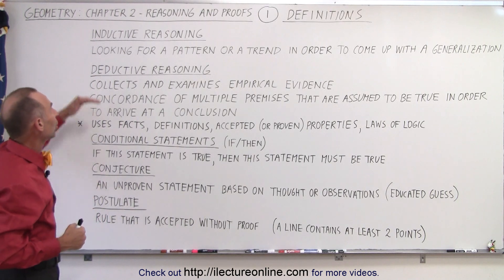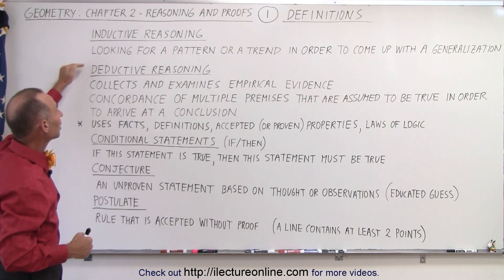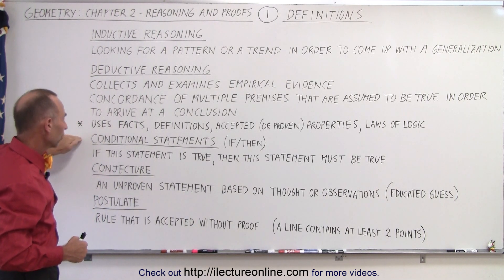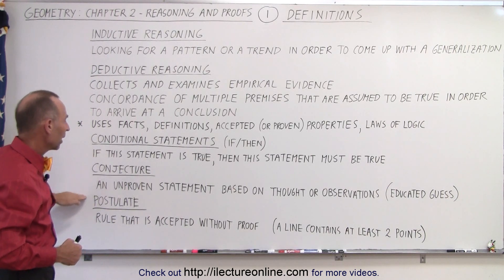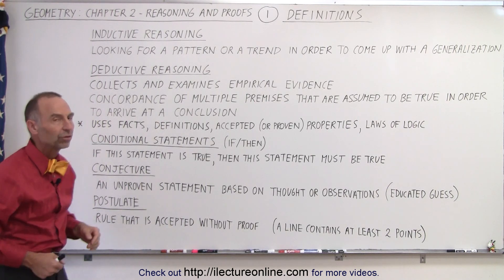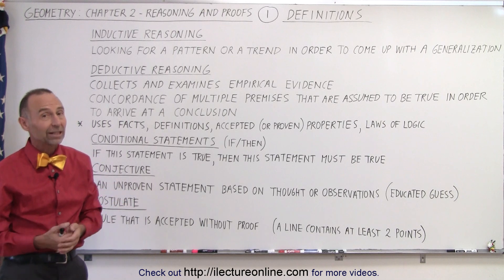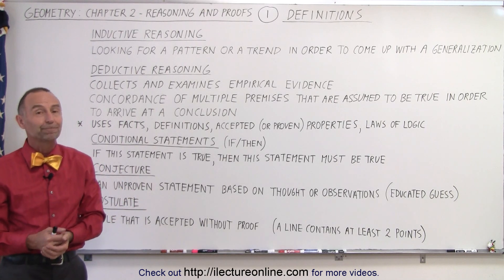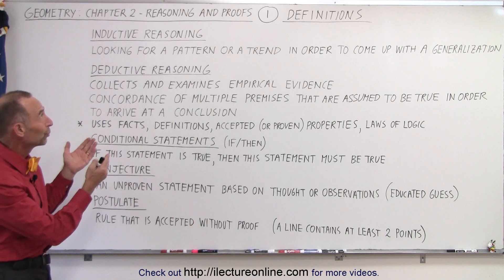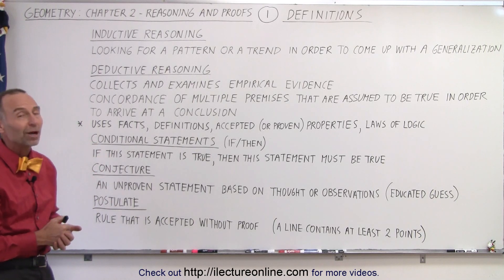Most of what we do in geometry will include inductive reasoning, deductive reasoning, conditional statements, conjecture, and postulates, or a combination thereof. And so we're going to see a lot of examples on how to use these particular things. And that's how we go through proofs and reasoning in geometry.